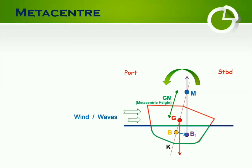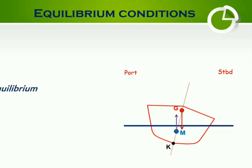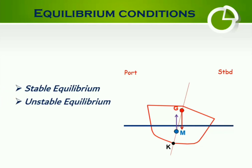Now, depending upon the respective locations of metacentre and the centre of gravity, the ship possesses three types of equilibrium: stable, unstable, and neutral equilibrium.